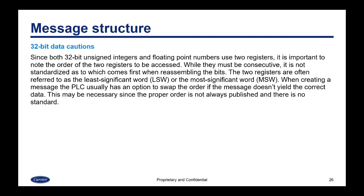With 32-bit data — both unsigned integers and floating point numbers — since they use two registers each, it is important to note the order of the two registers to be accessed. While they must be consecutive, it is not standardized as to which comes first when reassembling the bits. The two registers are often referred to as the least significant word or the most significant word. When creating a message, the PLC usually has an option to swap the order if the message doesn't yield the correct data. The proper order is not always published and there is no standard to the order of the words.